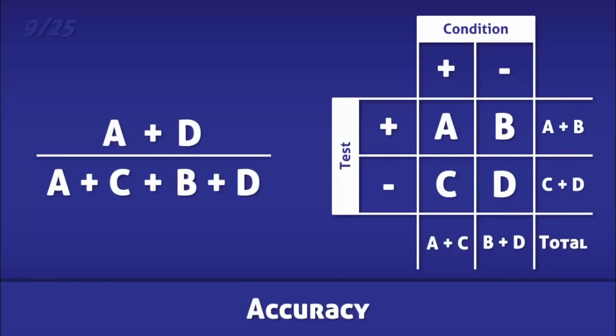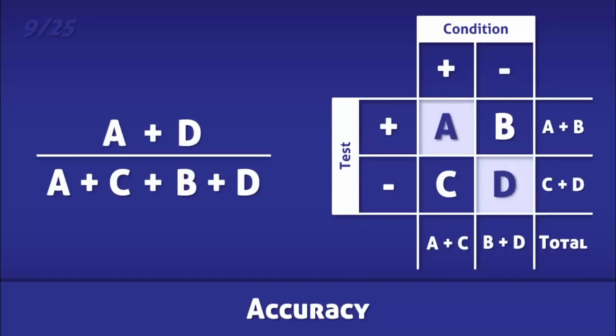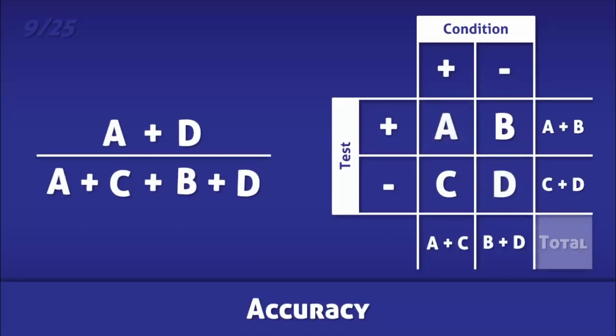Accuracy is the proportion of positive and negative test results that are correct. It is calculated by dividing the number of correct test results by the total number of tests conducted.